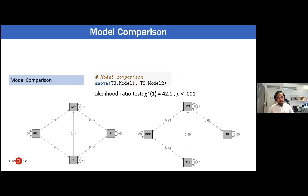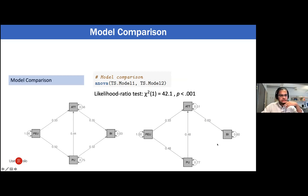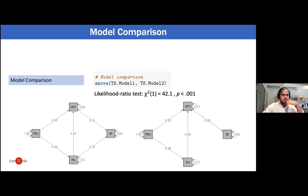Finally, and I think this is the most important thing — and again, this technique is not an exploratory but a confirmatory technique, so your models need to be based on theory — you can compare different models. If you remember, the authors were interested in evaluating whether there is a direct or indirect effect of perceived usefulness on intentions to use technology. You can use the average correlation matrix estimated in stage one to fit another SEM model and then perform a chi-square difference test to compare the performance of the two models. We see that when we estimate the direct path, the fit of the model is better than when we don't.